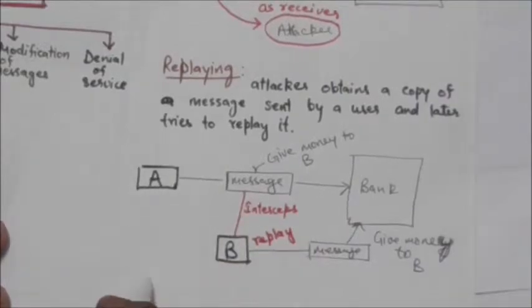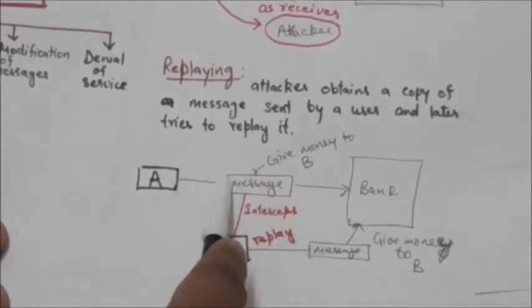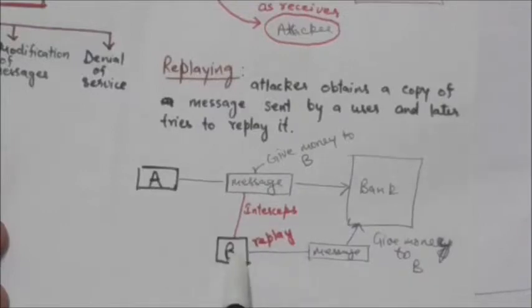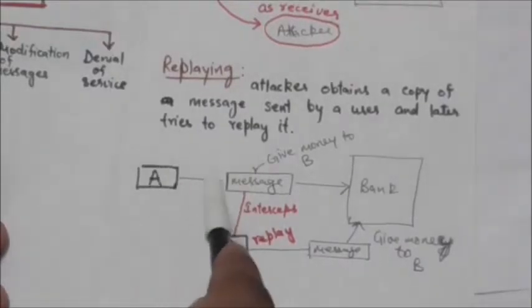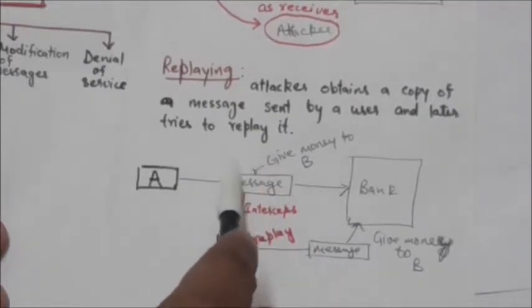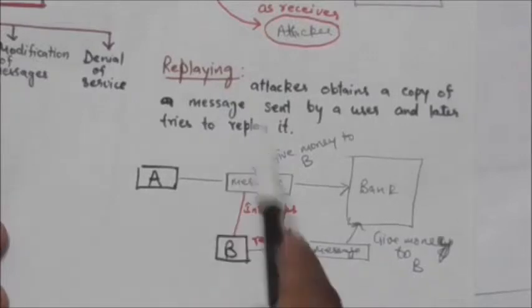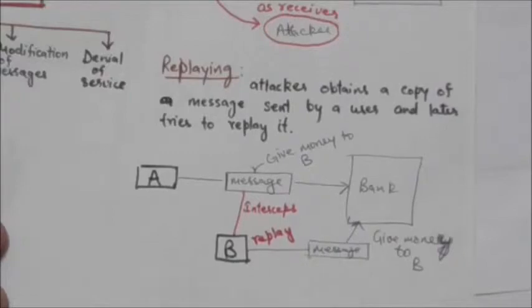Suppose person A has sent a request to his bank to ask for a payment to person B. What person B has done is that person B intercepts the message and sends it again to receive another payment from the bank. So this type of attack is replaying.